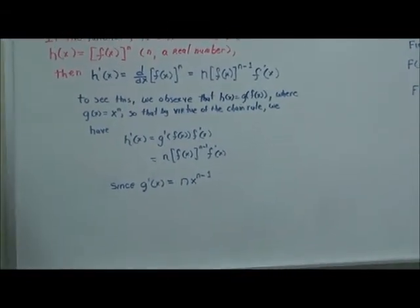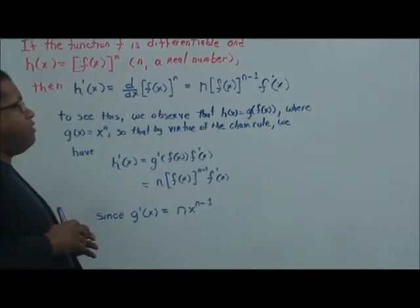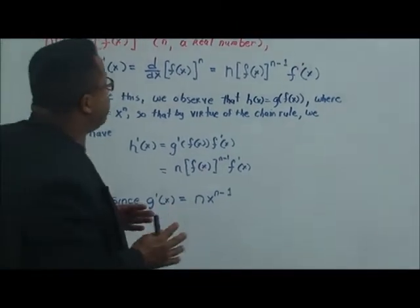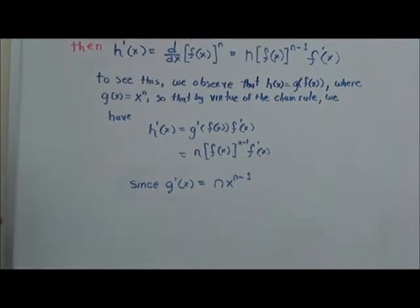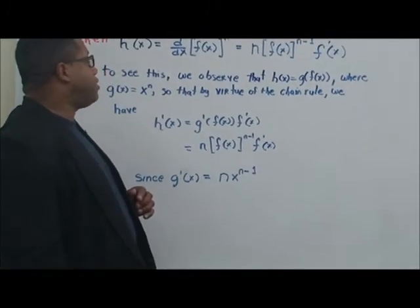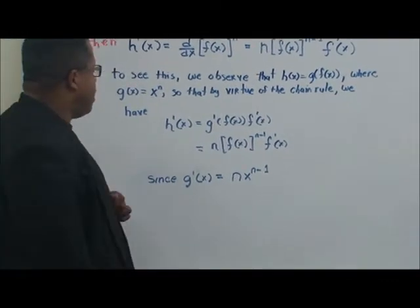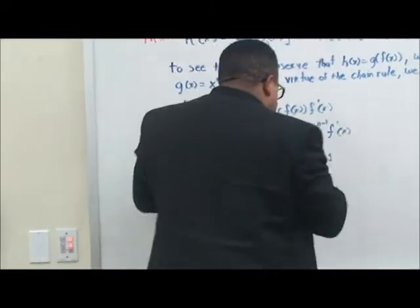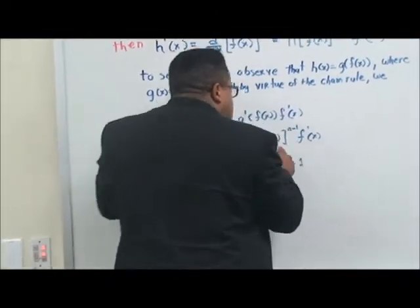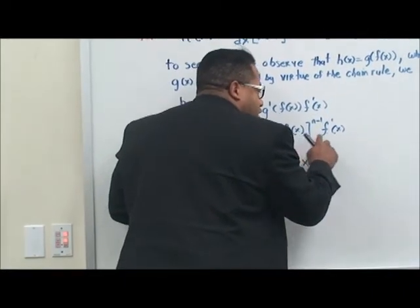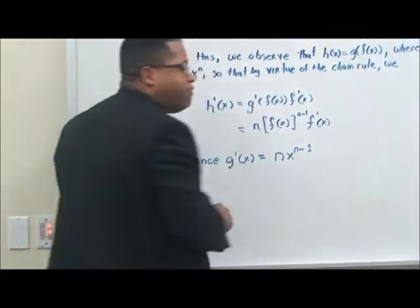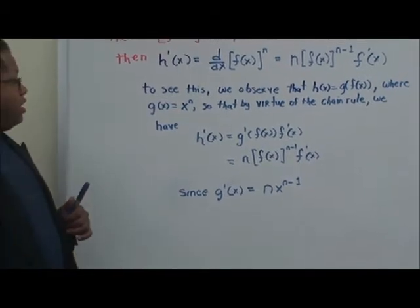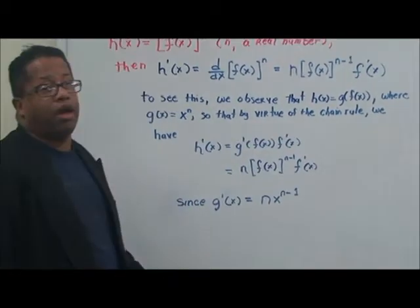To see this, we observe that h of x is equal to g of f of x, where g of x is equal to x to the n. So by virtue of the chain rule, h prime of x equals g prime of f of x times f prime of x. You're taking the derivative of the outside function with the inside function standing fast, then multiplying by the derivative of that inside function. And g prime of x equals n times x to the n minus 1.